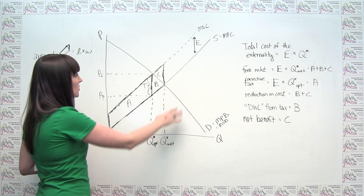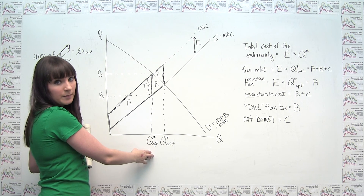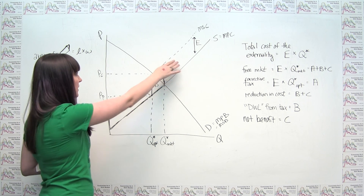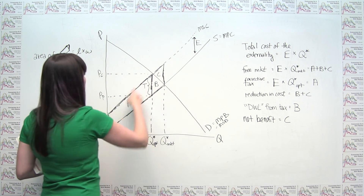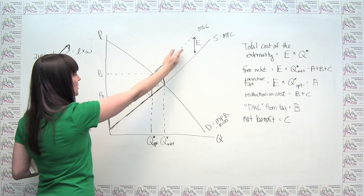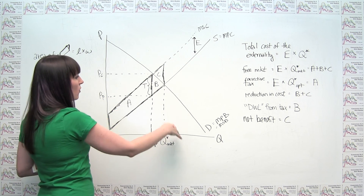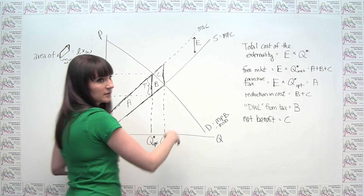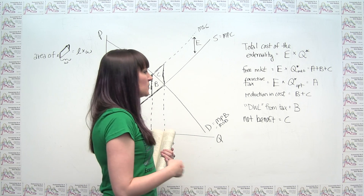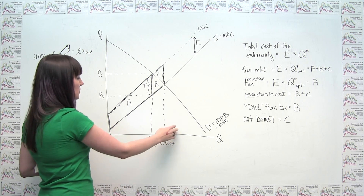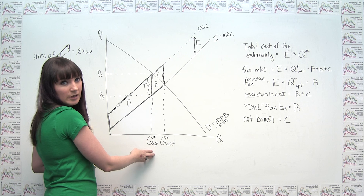If taxing either group gets us to the same place, then both approaches should also internalize the externality in the same way. It shouldn't matter whether we tax producers or consumers — we should be able to get to the socially optimal outcome either by taxing producers (shifting the supply curve) or by taxing consumers, since both approaches get us to the same market outcome.